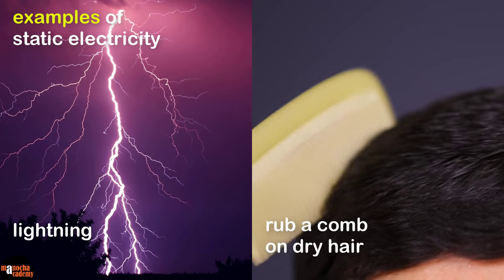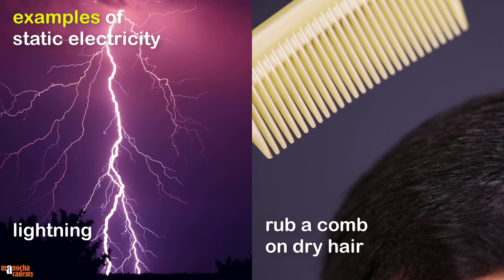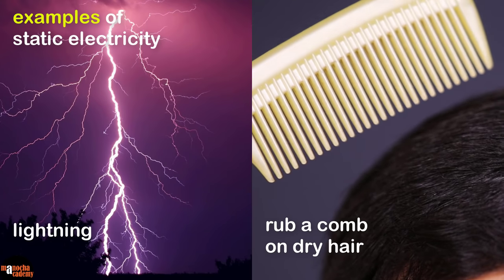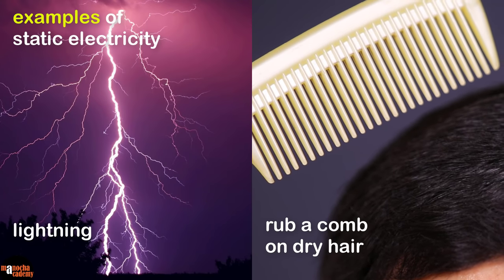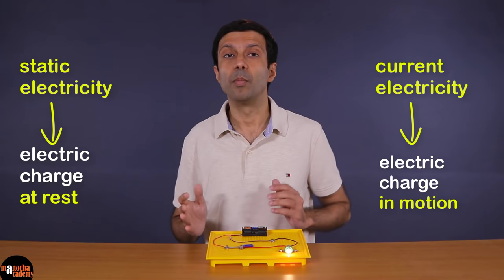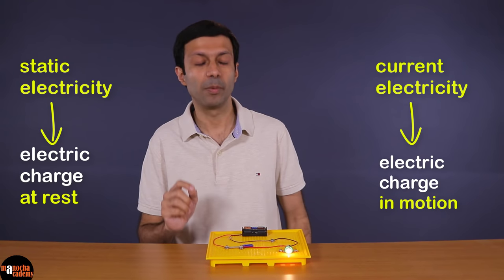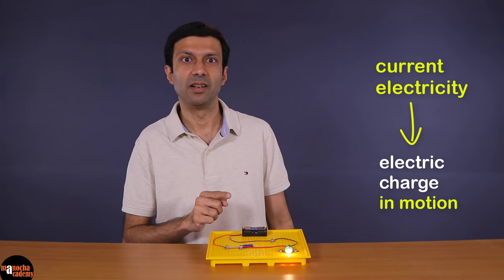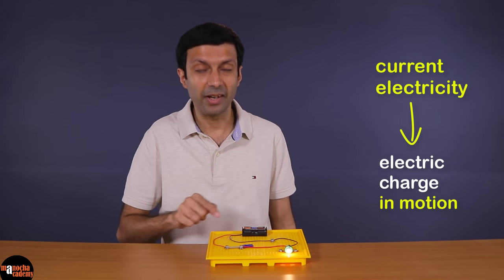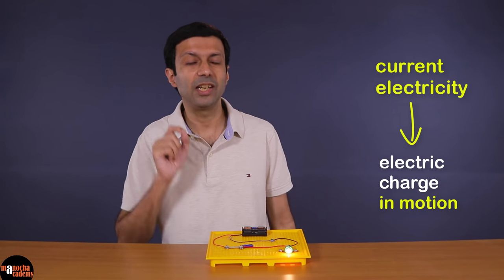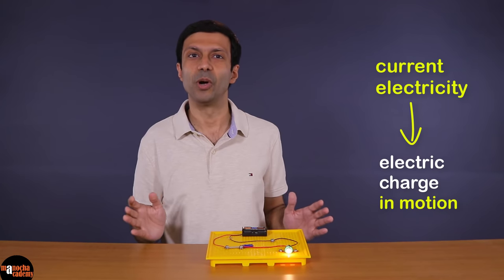How does it do that? Because the comb gets charged by friction. This is also an example of static electricity. But in this video, our focus will be on current electricity, where the electric charges are in continuous motion — they are continuously flowing.